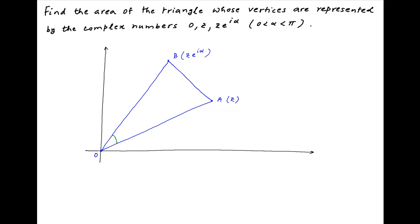Note that the angle between OA and OB is equal to alpha, and that the distance OA is equal to the absolute value of Z, and the distance OB is equal to the absolute value of Z times e raised to the power i alpha. Now, the absolute value of Z times e raised to the power i alpha equals the absolute value of Z times the absolute value of e raised to the power i alpha, which equals the absolute value of Z times the absolute value of cos alpha plus i sin alpha, which equals the absolute value of Z.